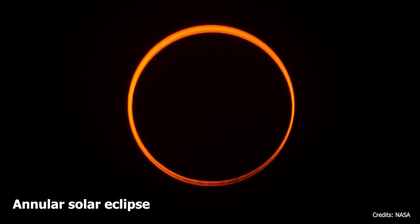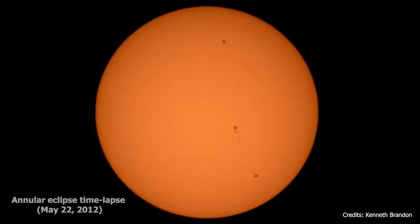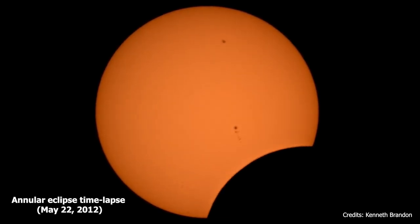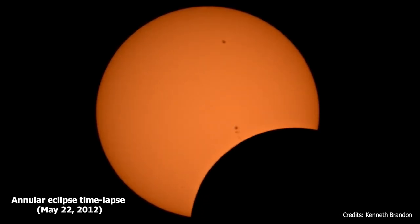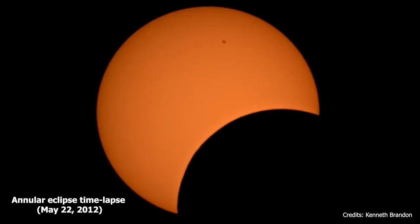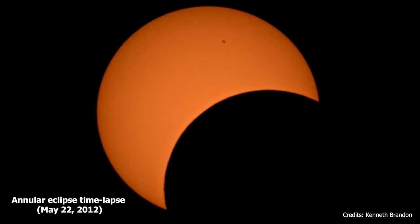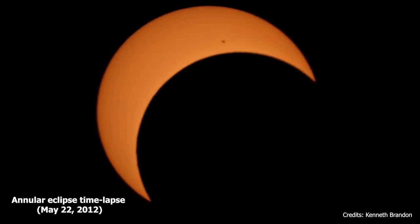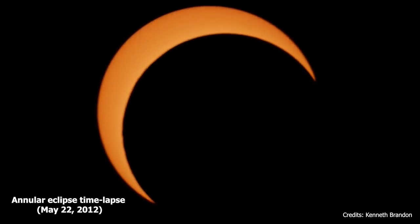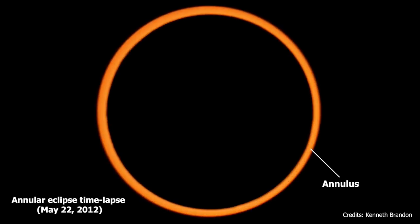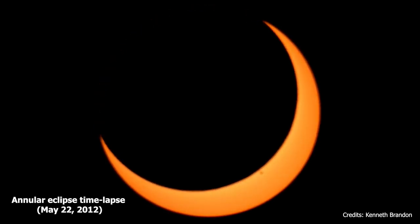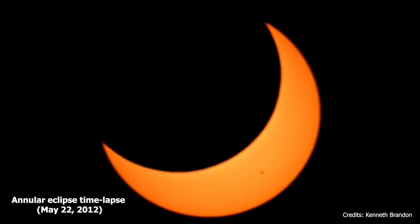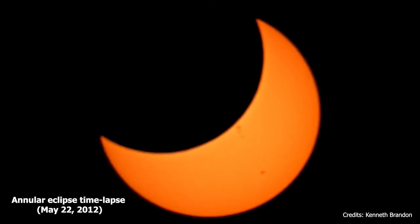The third type is an annular solar eclipse. It happens when the Moon passes directly in front of the Sun, but is positioned too far away from the Earth to cover the Sun completely. This produces a glowing ring around the Moon's silhouette. Because of this, the annular eclipse is sometimes called the Ring of Fire eclipse.